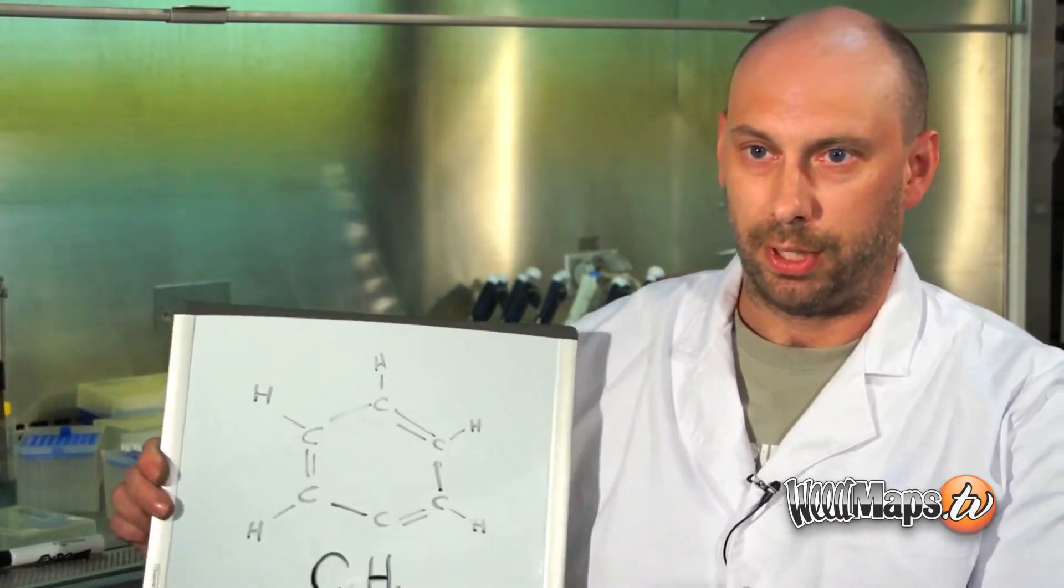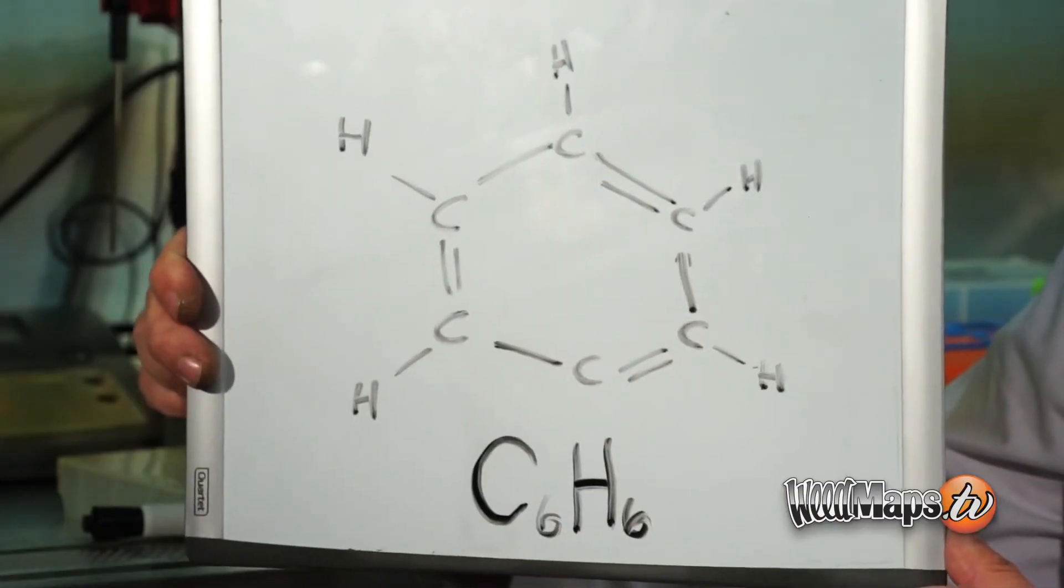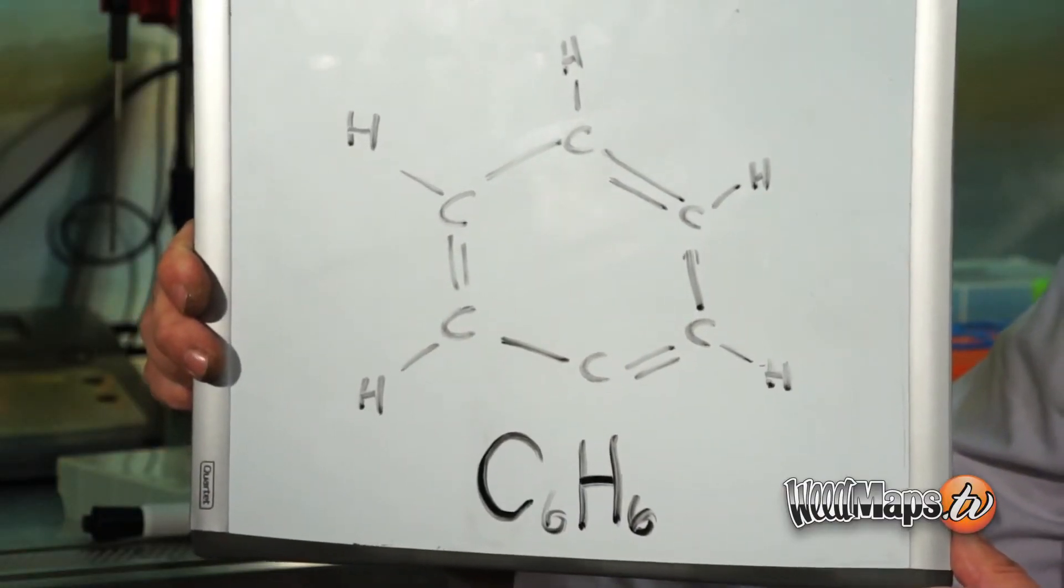The main terpenoids in cannabis are myrcene, lemonene, caryophyllene, and pyrene. Additionally, they all contain this structure - the simplest aromatic compound called benzene, with the formula C6H6.